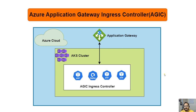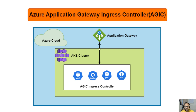Azure Application Gateway Ingress Controller is an open source project which helps us to integrate AKS cluster with Application Gateway. As you can see in this diagram, Application Gateway is not a part of AKS cluster — it's a separate service on Azure cloud. But with the help of AGIC we integrate Azure Application Gateway with AKS cluster, so we can utilize features like Web Application Firewall and L7 load balancing, and route traffic through Application Gateway to our services.